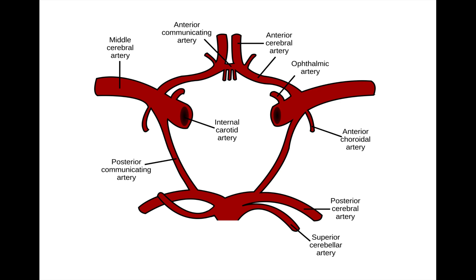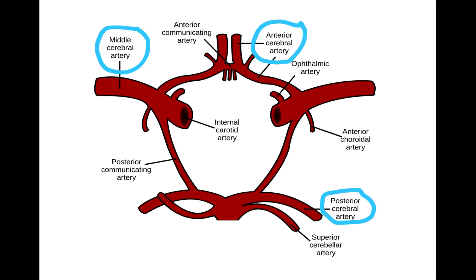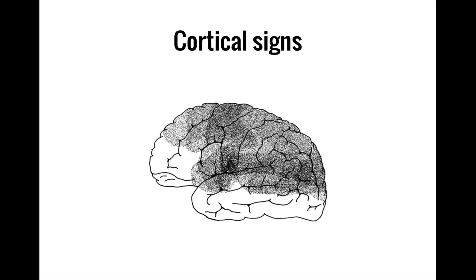We learned in an earlier video on cerebral blood supply and the Circle of Willis that there are three pairs of arteries that supply the cerebral cortex: the anterior, middle, and posterior cerebral arteries. Because the cortex is responsible for higher level functions, strokes in these arteries will produce what are known as cortical signs, where things like speech, awareness, and planning are impaired. When you see cortical signs such as this, you should be thinking of a stroke in the cortex, which you can then pair with information about where deficits are occurring in the body to localize the stroke to a specific artery.